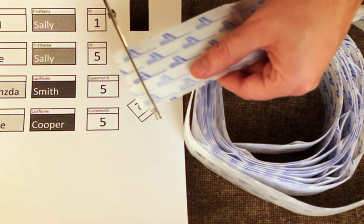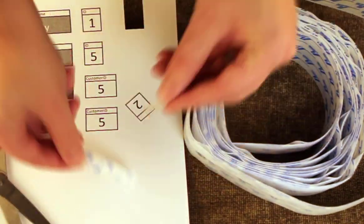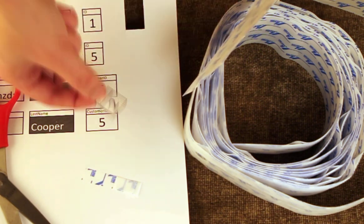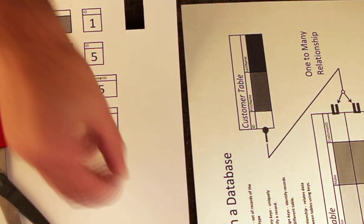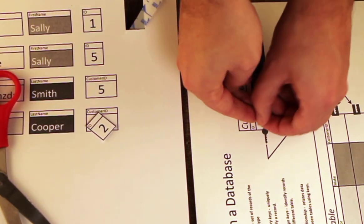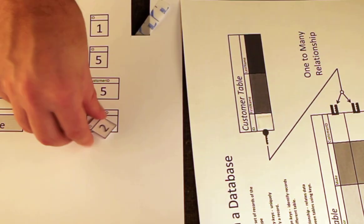Pieces of self-adhesive loop and hook fastener hooks can be applied on the back of each data element. The spreadsheet and database sheets are printed on both sides of a piece of cardstock, with pieces of self-adhesive fuzzies applied to the spaces where data belongs.